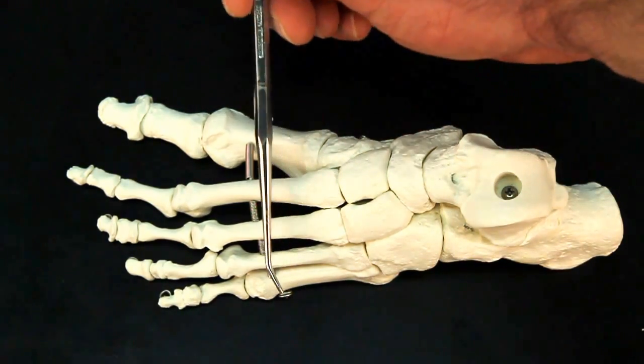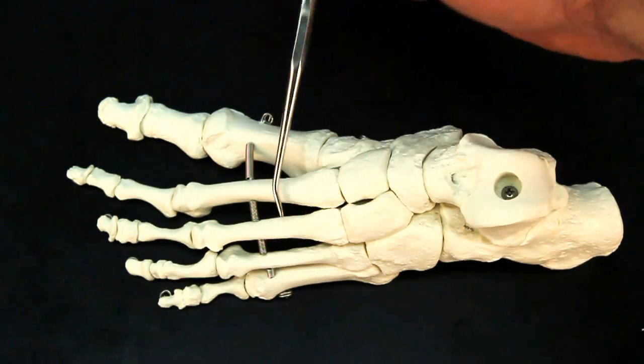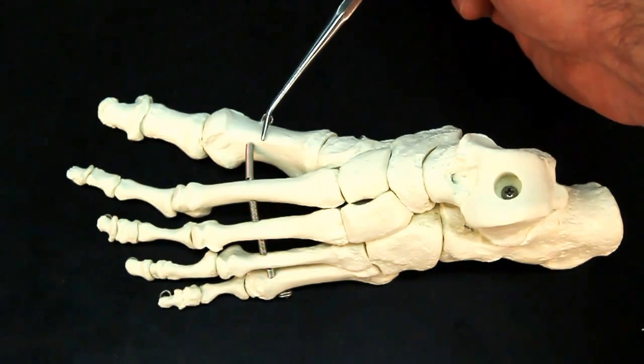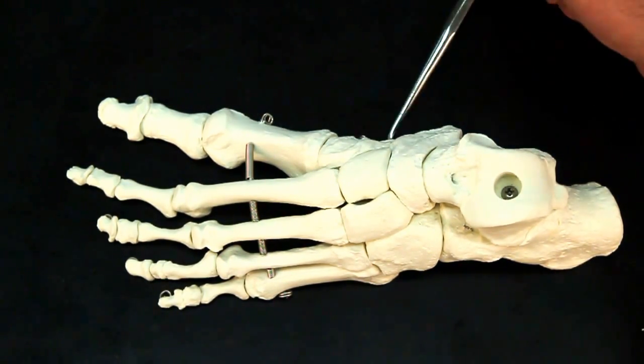From there, we move into our five metatarsals, the largest being in the big toe, kind of in the arch of the foot here.